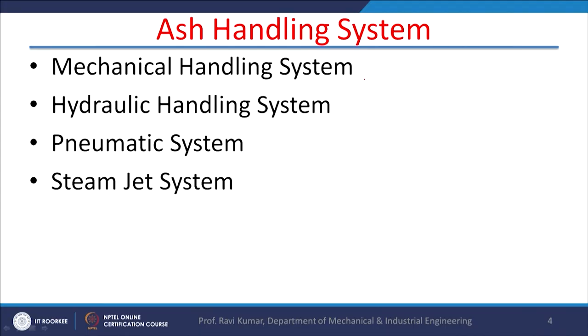Ash has to be handled and removed from the grate or the boiler and dumped somewhere. There are ash handling systems. After coal is burned in a boiler, the ash handling system transports the ash elsewhere. The ash handling system can be a mechanical system, a hydraulic system, a pneumatic system, or a steam jet system.